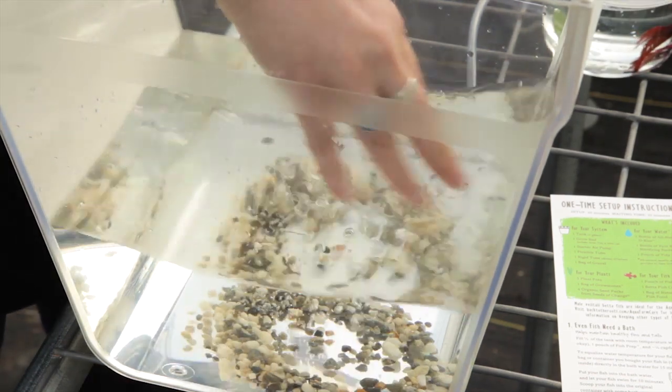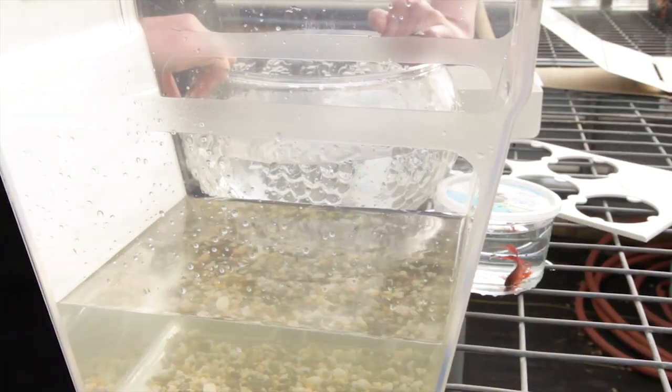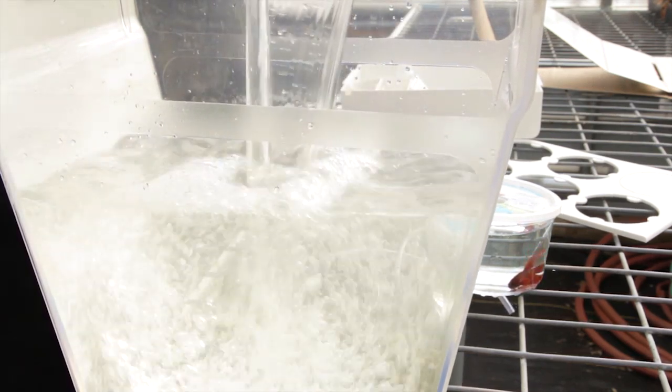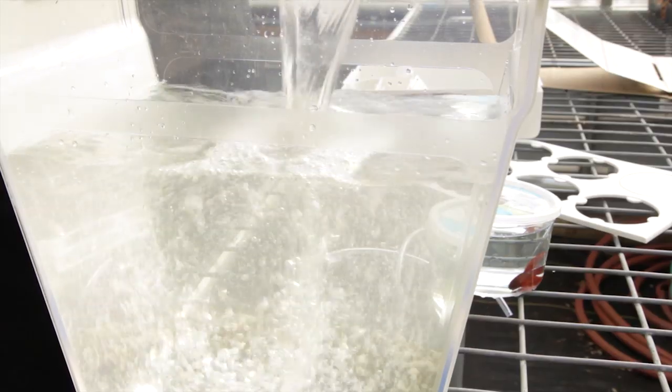Pour the washed gravel onto the floor of the tank. Place your tank in its final home because it gets heavy to move later, and then refill the tank with new room temperature water up to the textured line.